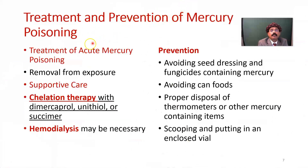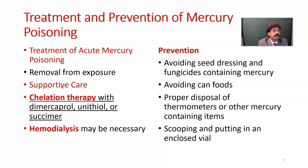Treatment and prevention of mercury poisoning: for acute mercury poisoning, the first step is removal from exposure, then decontamination and supportive care. There may be psychiatric problems and disturbances in kidney and lung function, so everything should be supportive. As it is a heavy metal, we need chelation therapy with dimercaprol, unithiol, or succimer.